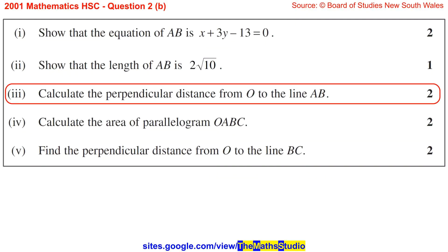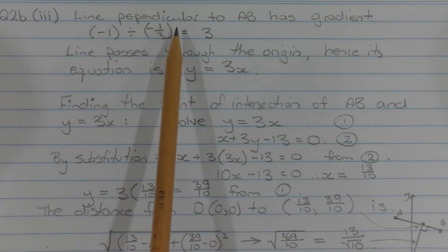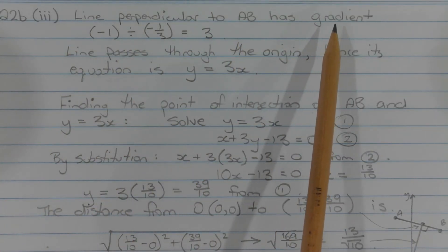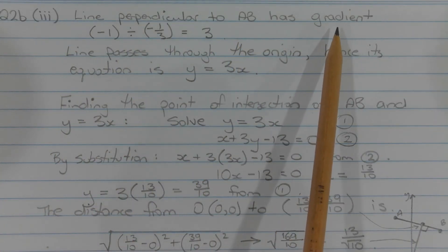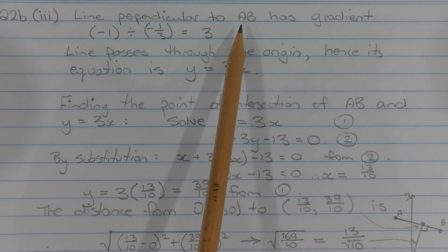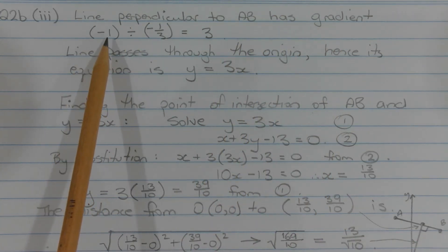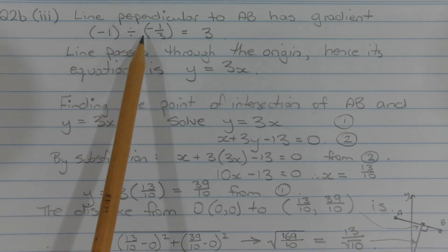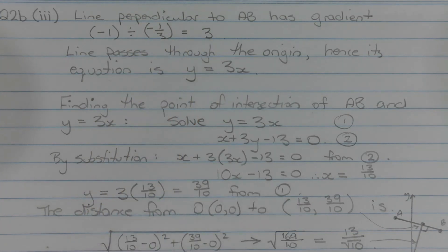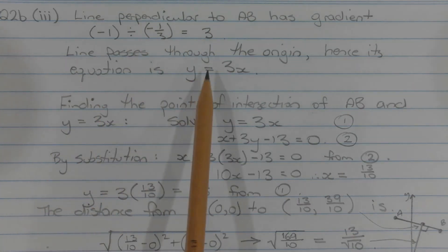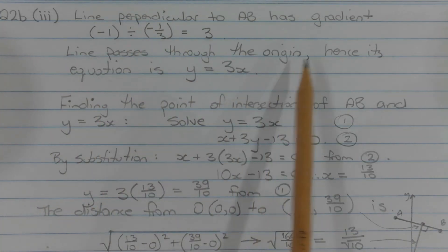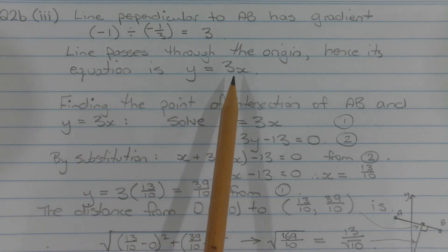Part 3: Calculate the perpendicular distance from O to the line AB. A line perpendicular to AB has a gradient that is the negative reciprocal of the gradient of AB, worked out as negative 1 divided by negative 1 over 3, which equals 3. Since the line passes through the origin, its equation is y equals 3x.